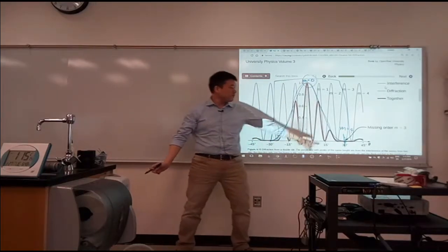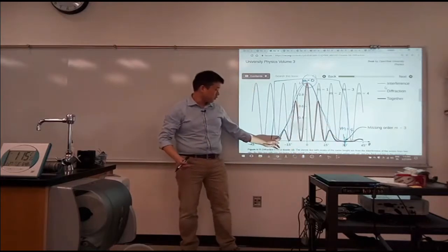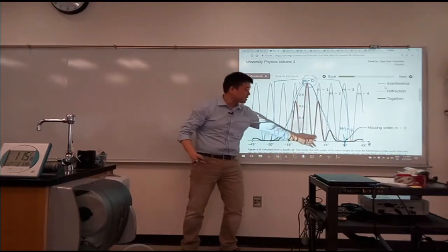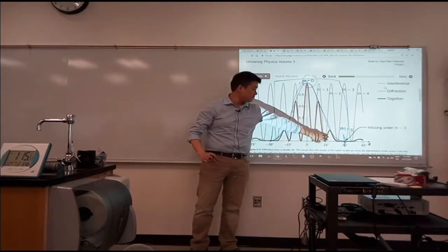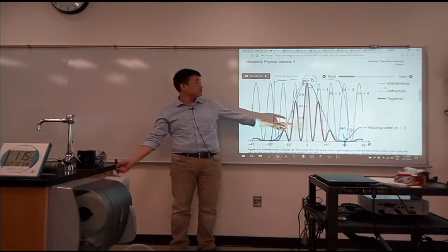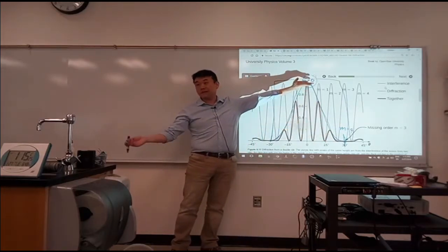So if your missing order is four, then the total number of the interference maxima will be, well, four minus one, three times two, six, plus one more, so seven.